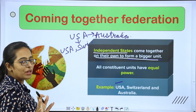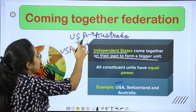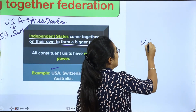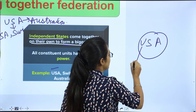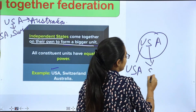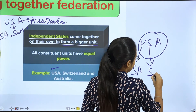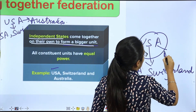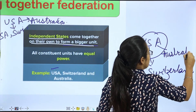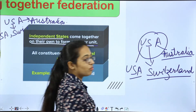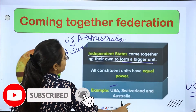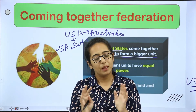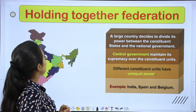This is a very simple trick. USA means you remember USA, then Switzerland, then Australia. It's very easy to remember. Coming Together Federation: units come together and make a big unit — that is Coming Together Federation.